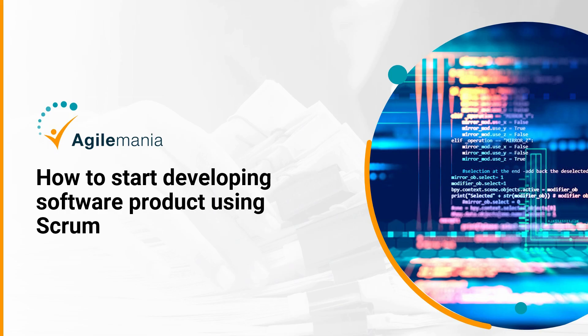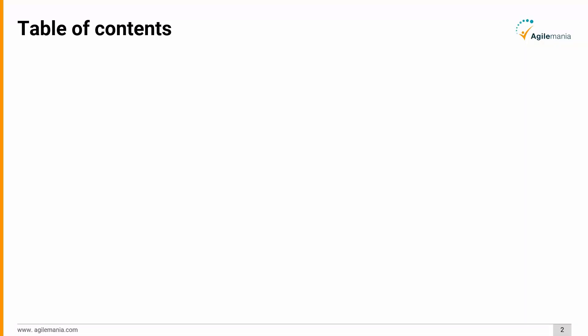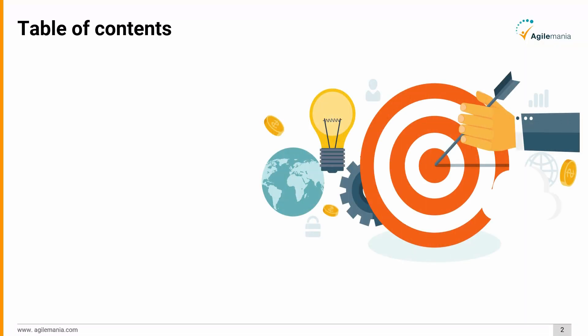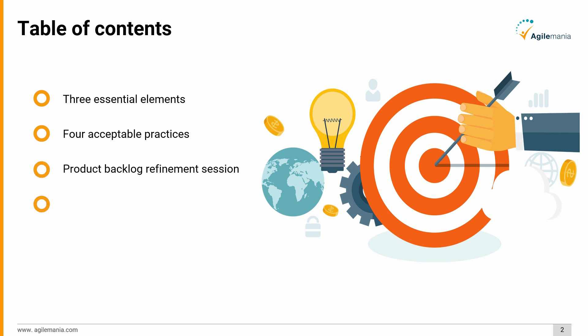In this video we will discuss how to start developing software using Scrum. That will involve discussing the three essential elements: product goal, product backlog, and scrum team, and then the four acceptable practices that include product backlog refinement session, definition of done, team agreement, and sprint duration.